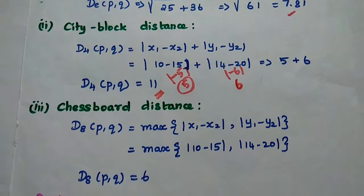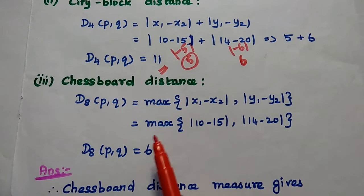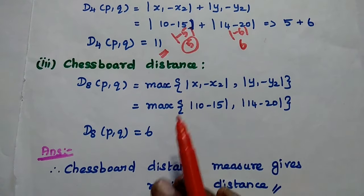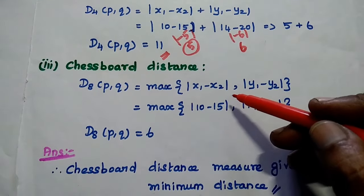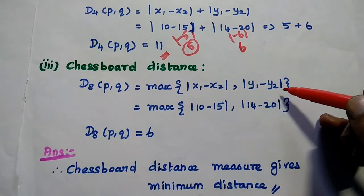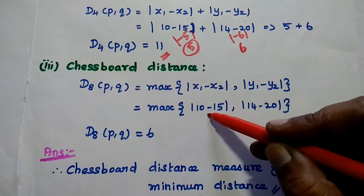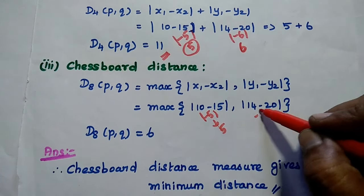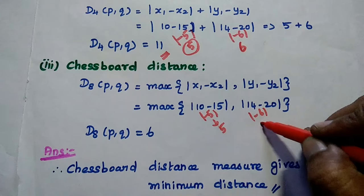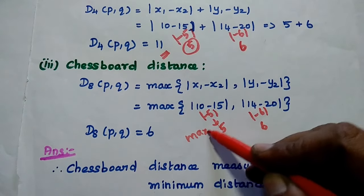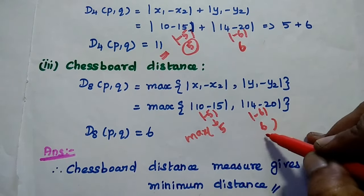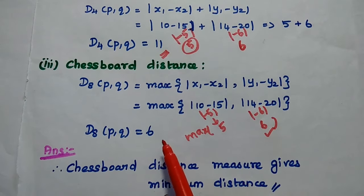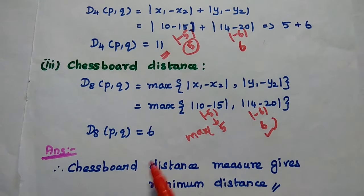The third method is the chessboard method. Here we consider the maximum of the modulus differences between the two coordinates: maximum of |x1 minus x2| and |y1 minus y2|. So |10 minus 15| gives 5, and |14 minus 20| gives 6. The maximum of 5 and 6 is 6, so the chessboard distance is 6. Therefore, the chessboard method gives the minimum distance between the two pixels.